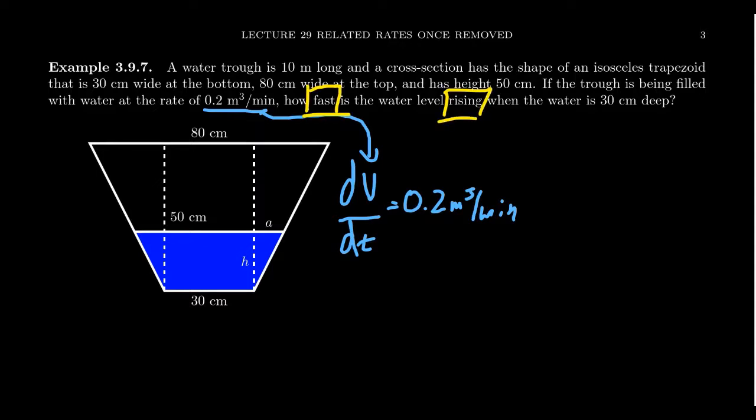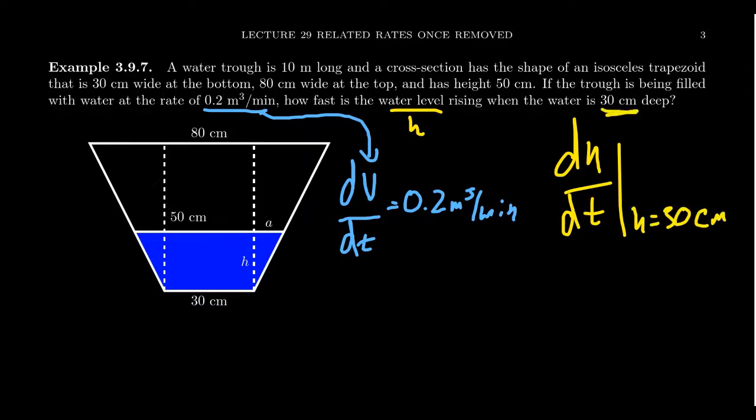The other thing we can see are words like fast and rising. These are words that describe a rate of change, the rate of change of the water level. If we call the water level H, then we are trying to figure out what is the change of height with respect to time at the moment that the height is equal to 30 centimeters. So we have to find a relationship that connects the volume and the height together.